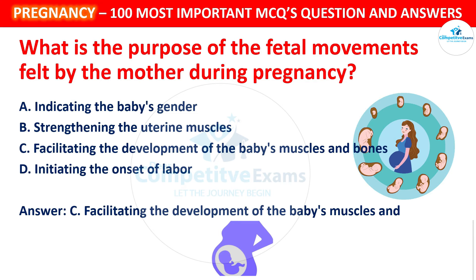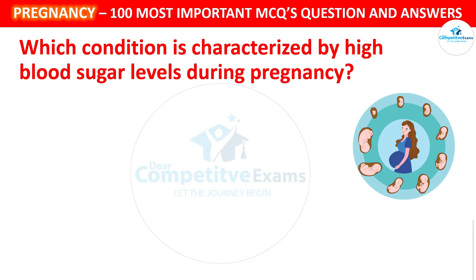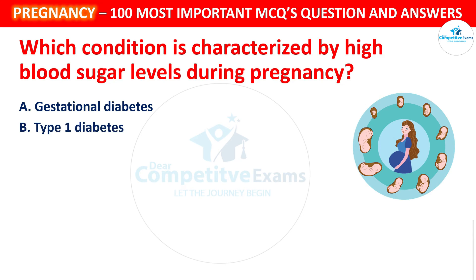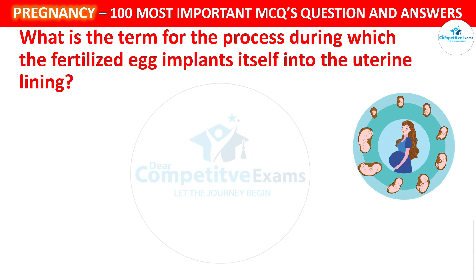Next question: Which condition is characterized by high blood sugar levels during pregnancy? Your options: Gestational diabetes, Type 1 diabetes, Type 2 diabetes, or Hyperthyroidism. The correct answer is Gestational diabetes. Gestational diabetes is a type of diabetes that develops during pregnancy and is associated with high blood sugar levels.